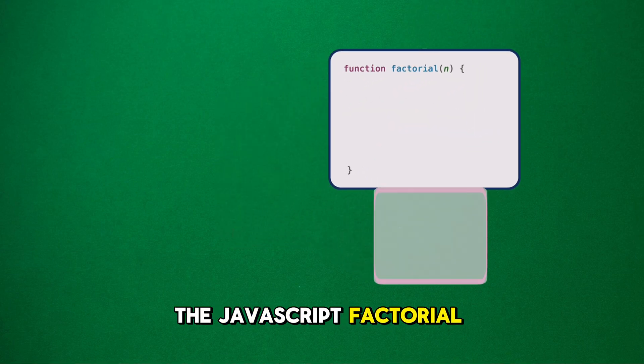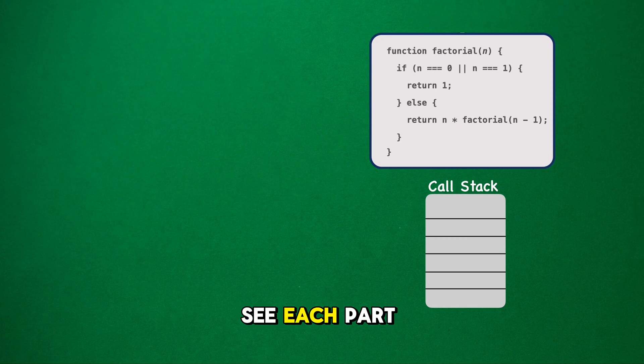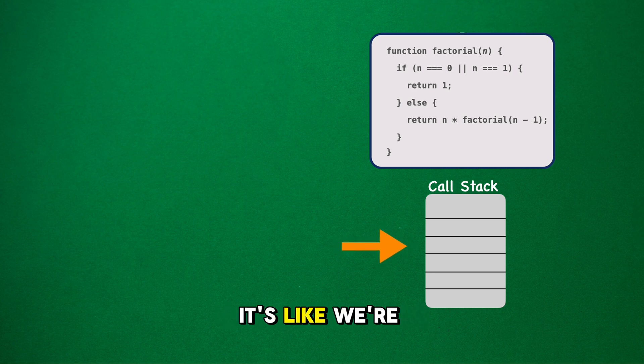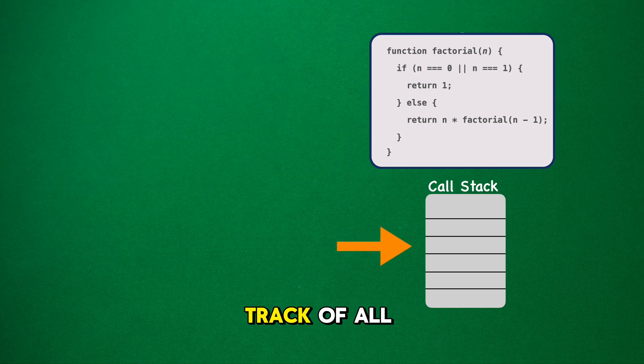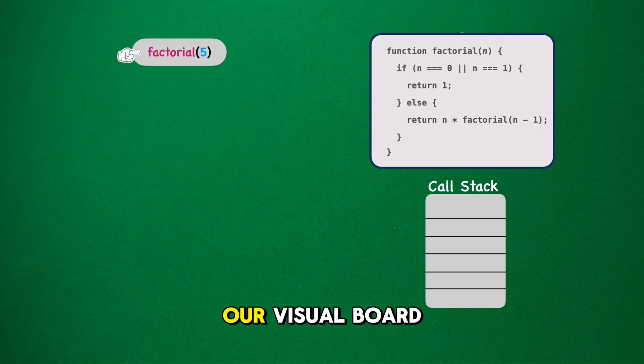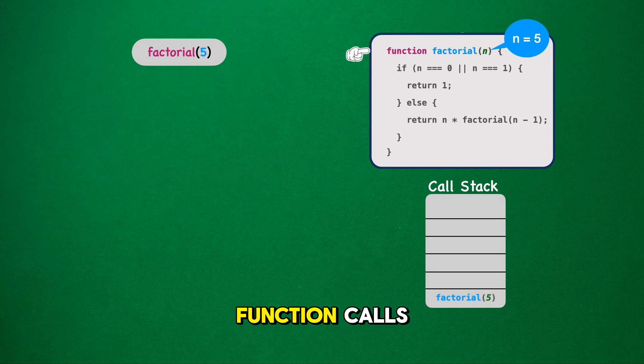Let's walk through the JavaScript factorial function step by step, imagining a visual board where we can see each part of the process. Imagine a stack of plates at a buffet. Each time we call our function, it's like we're adding a plate to the stack. That's our call stack, where we keep track of all the function calls. First, we call factorial 5. On our visual board, we add factorial 5 to the call stack, which is our way of keeping track of the function calls. Since n is not 1 or 0, we don't hit our base case.